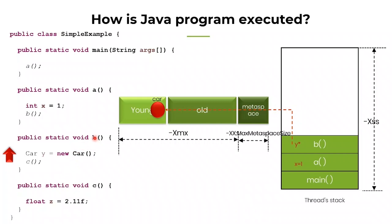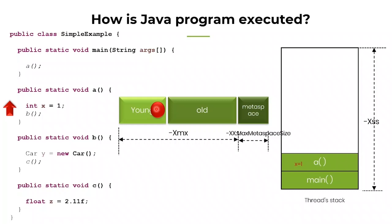Now the thread has completed executing method B and is going to leave it. When the thread leaves method B, the B method stack frame is removed and variable y is also removed. But if you see the car object which was created, it still continues to remain in memory. It will continue to remain in memory until the next garbage collection event runs. When the next GC event runs, it will check whether the car object has any references. Now there are no more active references — the only reference was y, and y is gone. Since there is no more active reference for this car object, it becomes eligible for garbage collection. Until that next GC event runs, this car object will be residing in memory.